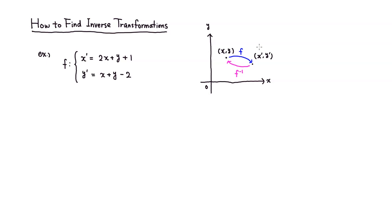So let's find that. This is pretty simple — all we have to do is solve this system of equations for x and y. First, let's try to eliminate y. I can subtract the second equation from the first equation. So x prime minus y prime is equal to: you have 2x minus x, which gives x; then y minus y, which is zero — that's the point; then 1 minus negative 2, so you're adding 2, giving positive 3.